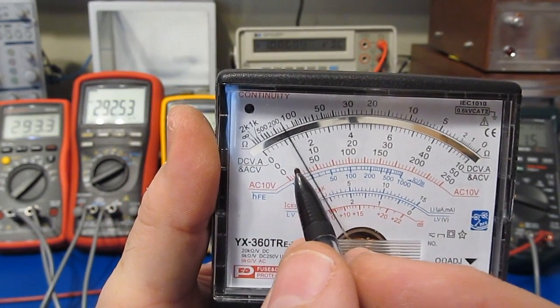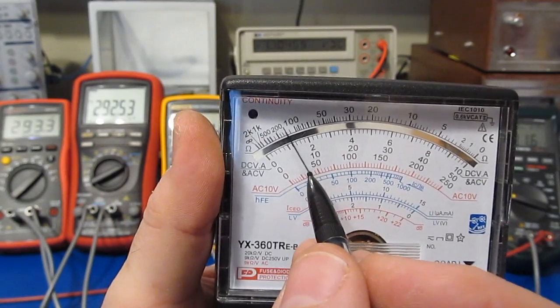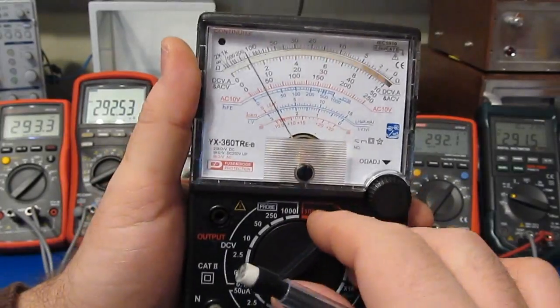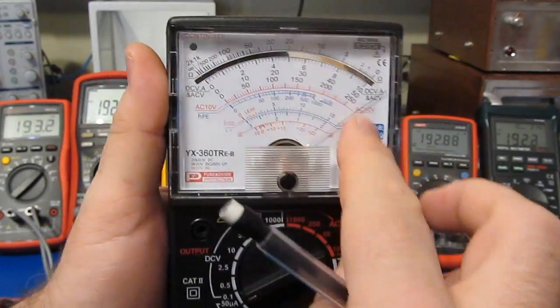You know, it's 5 ticks per division. So according to this, it's a little over 300 microamps. Again, not very accurate. If we went up one range again, it's just going to rail the meter.